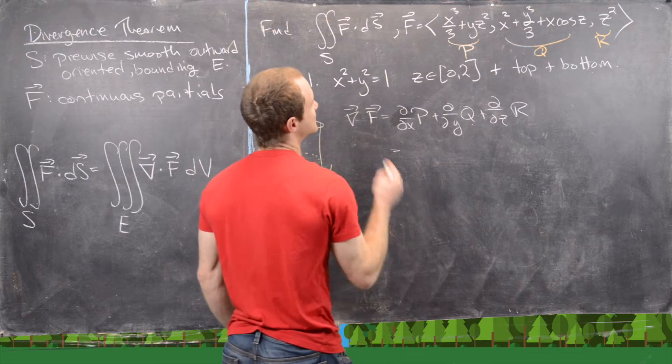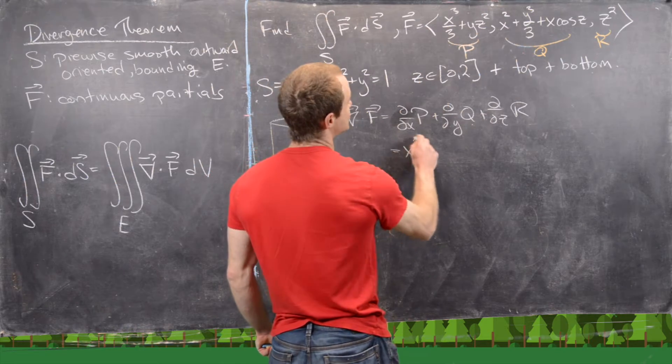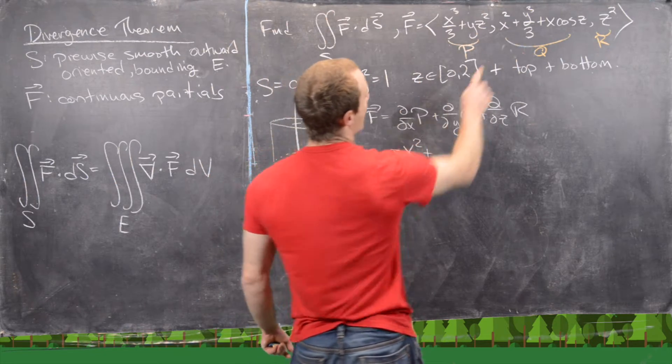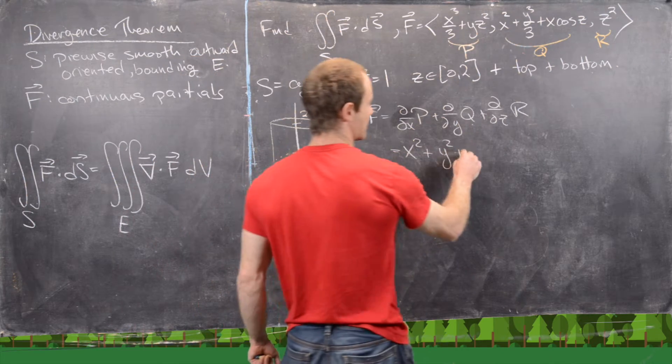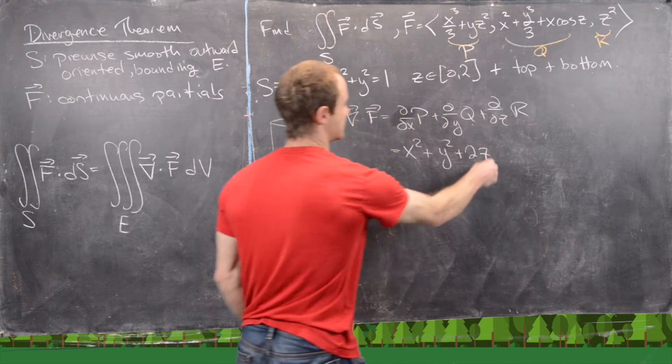So let's see what that gives us. That's going to give us x squared, and then plus y squared, and then finally plus 2z.